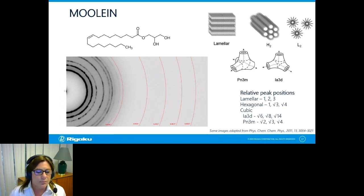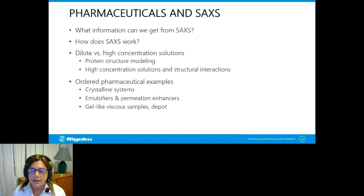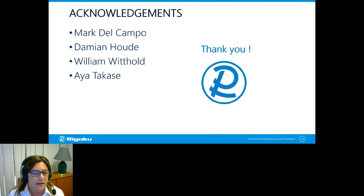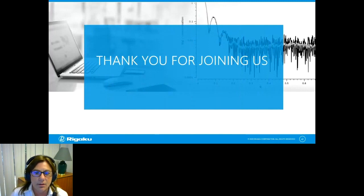All right. So just real quickly, I just want to review what we covered today. So we looked at some of the information we can get from SAXS. We looked at how SAXS worked, and we looked at dilute versus high concentration samples, and how you can do some structural modeling if you have mono-dispersed ideal samples, how you can extract some high concentration structural interaction information, and we can look at some ordered pharmaceutical examples. And with that, I'd just like to acknowledge Mark Del Campo, Damien Hood, William Whithold for providing samples, feedback, and measurements, and Aya Takase for today. And I'd like to thank you for joining.